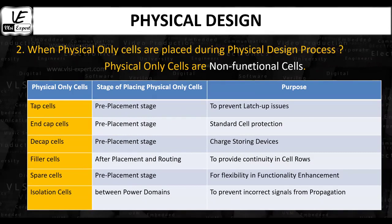Let us see the various physical only cells, their typical usage, and their insertion in design during the physical design process. Some of the physical only cells are the well tap cells, end cap cells, decap cells, filler cells, spare cells, and finally the isolation cells. Let us discuss all these cells one by one.